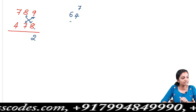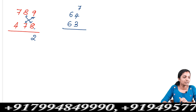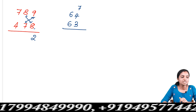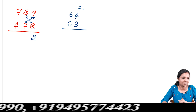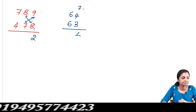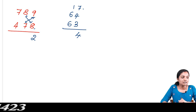8 eights are 64. 7 nines are 63. So 6 and 3 give us 7 carry forward. Then 7 plus 4 is 11, 11 plus 3 is 14 — write 4, balance 1.